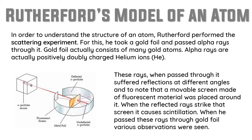One thing he used was a gold foil. Why did he select a gold foil? Gold is a highly malleable metal — we can make it into a very thin sheet. Here, the gold foil was about 1000 atoms thick — think about how thin that is! That is why he took a gold foil, because it is a highly malleable metal.